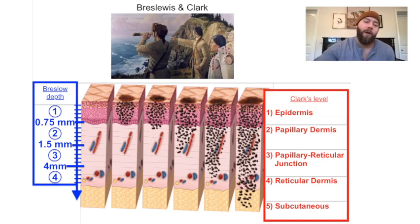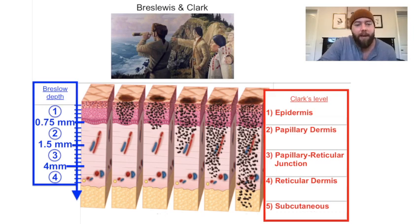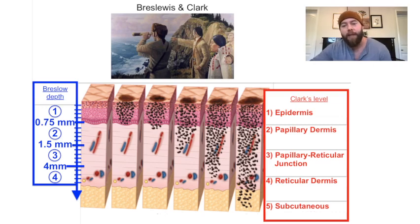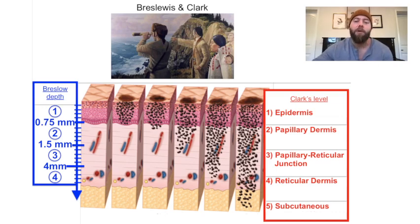On the left, I have Breslow's depth, which is based on millimeters of invasion of the melanoma. On the right is Clark's levels, and 'level' is used because it's based on the anatomical level of invasion of the layers of the skin.